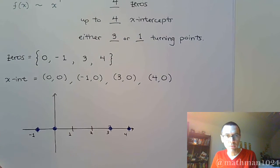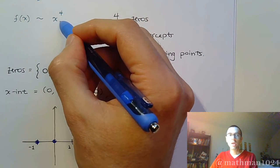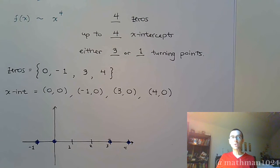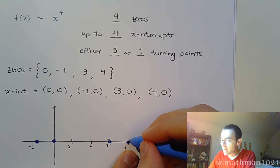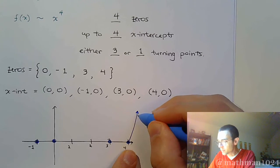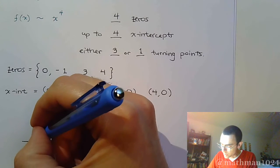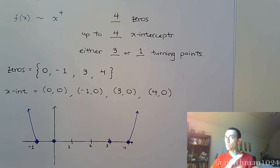At the top, we mentioned that this guy is going to be comparable to x to the fourth, which means the end behavior is supposed to be U-shaped on the ends, which means he's going up on both ends. So from this farthest x-intercept to the right, we should be going up. And the same thing should be true for the one over here on the left. He should be going up to match the end behavior.